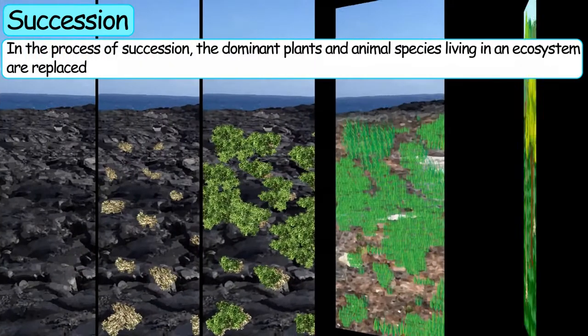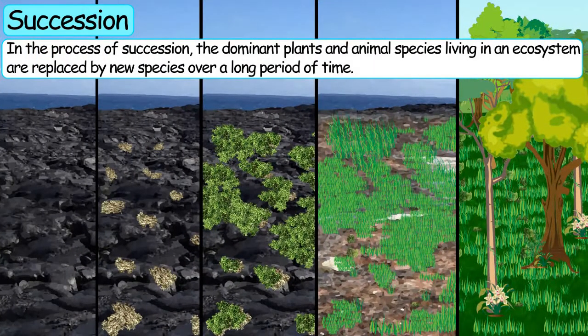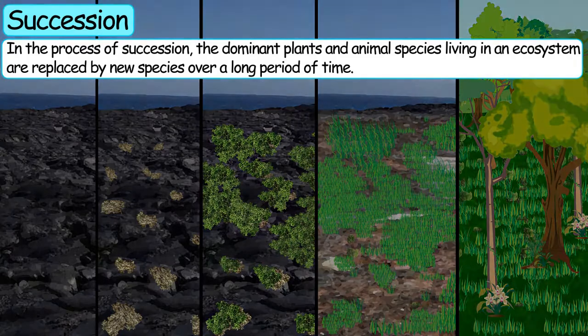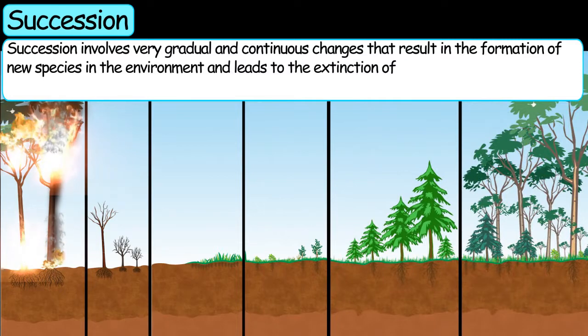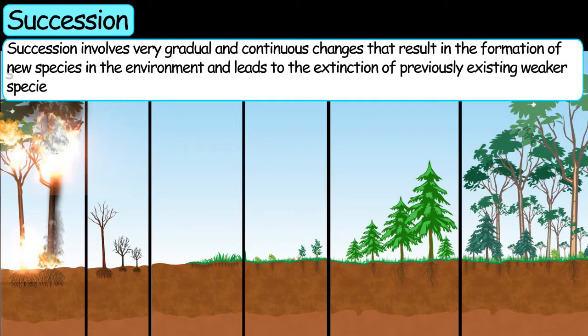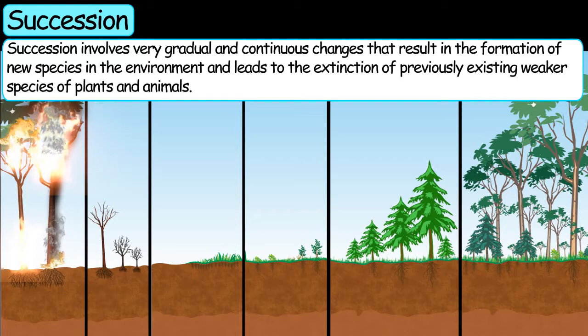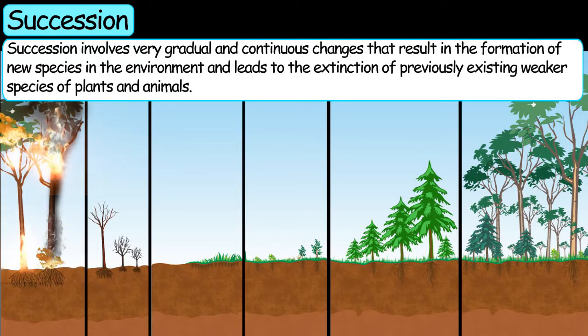In the process of succession, the dominant plants and animal species living in an ecosystem are replaced by new species over a long period of time. Succession involves very gradual and continuous changes that result in the formation of new species in the environment, leading to the extinction of previously existing weaker species of plants and animals.